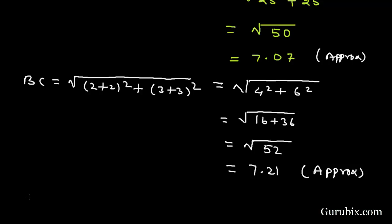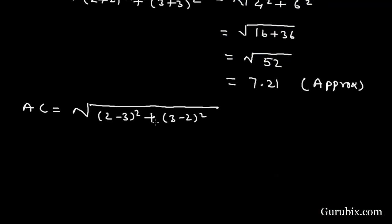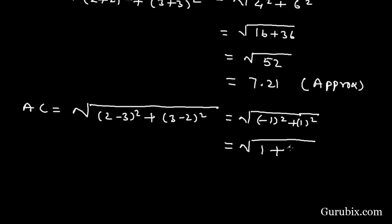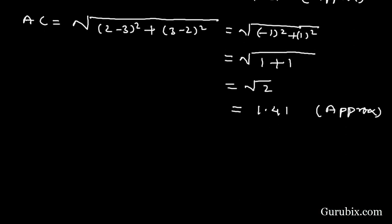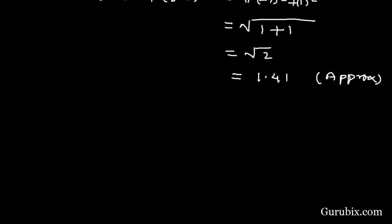Now we shall find the distance AC using the distance formula: square root of (2-3)² + (3-2)², which equals square root of (-1)² + (1)², giving us square root of 1 + 1 = square root of 2, which is approximately 1.41.